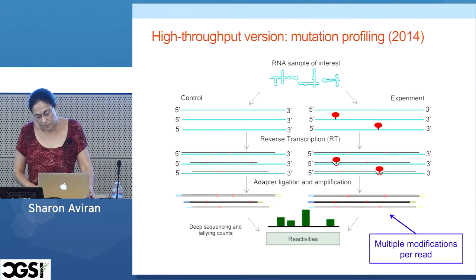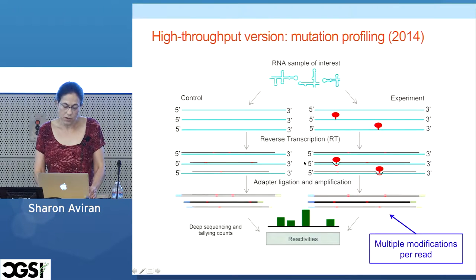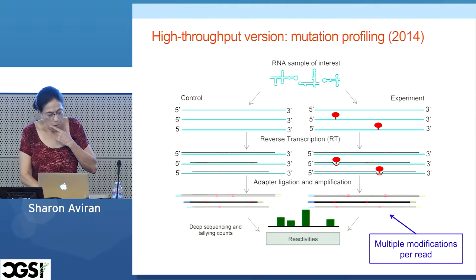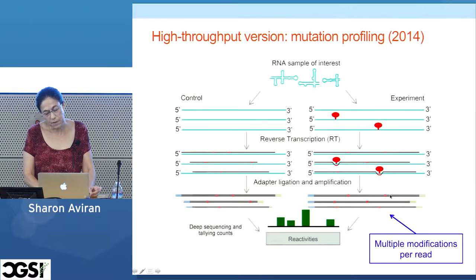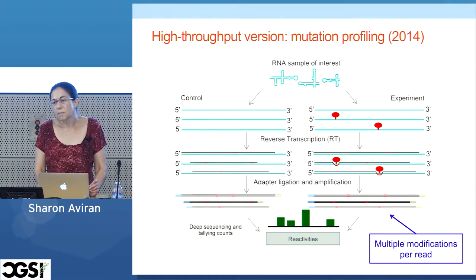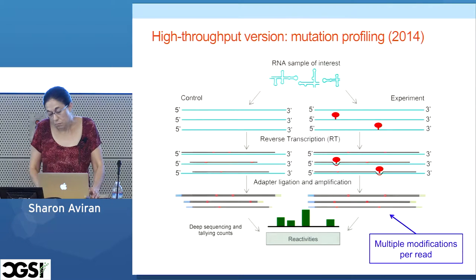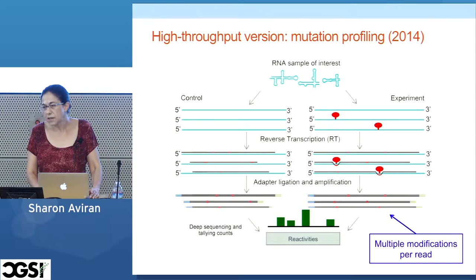More recently, a new version facilitated by next-generation sequencing was developed where instead of terminating at the modification location, you continue transcribing but introduce a mutation at that location — very similar to bisulfite sequencing. The reactivities look the same, but there is an important difference: reads from this mutational approach can assay multiple modifications per read, whereas the previous truncation approach can only tell you about the first modification encountered. This may be very relevant if you're trying to characterize folding ensembles.